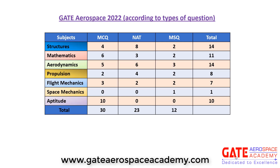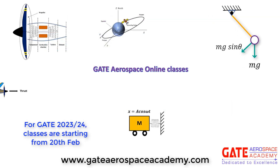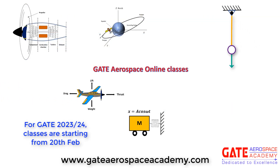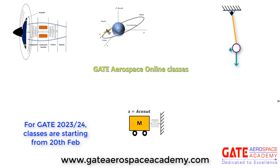So the total number of questions were 65. If we talk about the difficulty level of the exam, most of the questions were easy, apart from very few questions which were moderate type. So overall it was an easy paper except for a few moderate questions. We are starting a new batch for GATE 2023 and 2024, and the new batch is going to start from 20 February.